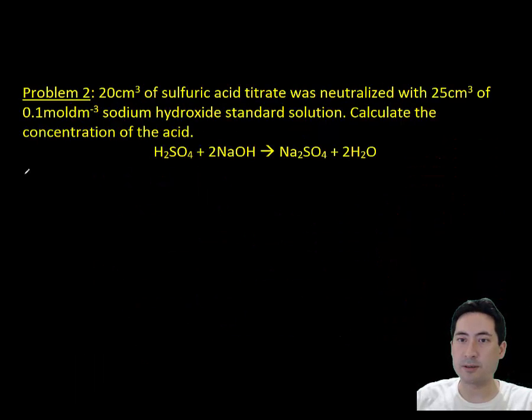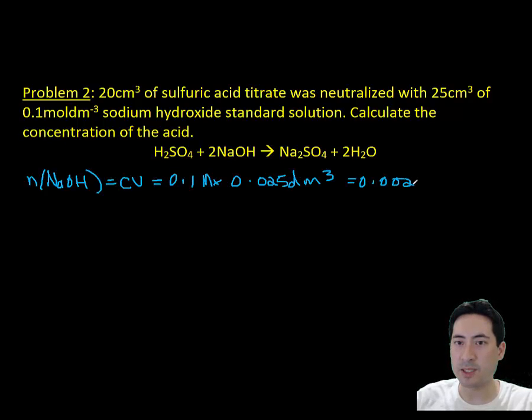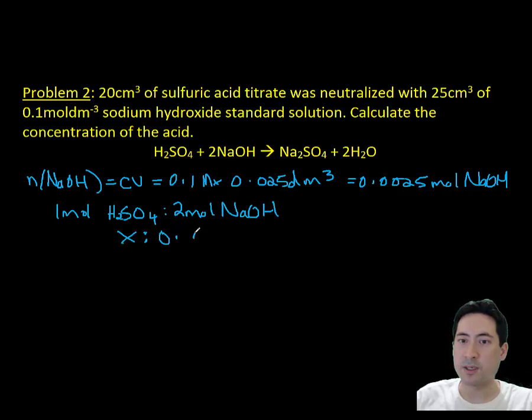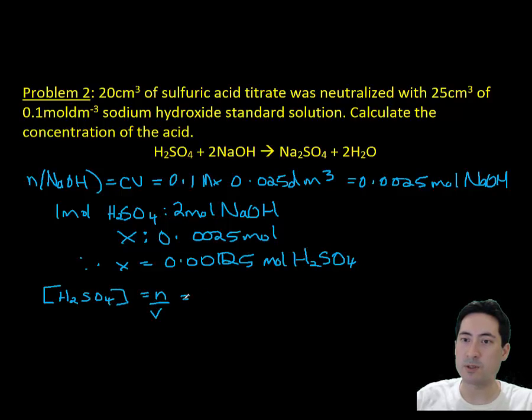Lastly is a proper titrations calculation. This is what you should be doing when you do your titrations. We have 20 mLs of sulfuric acid titrate neutralized with 25 mLs of 0.1 mol sodium hydroxide standard solution. We're trying to work out the concentration of this sulfuric acid. There's our balanced equation. We used 0.0025 mols of sodium hydroxide, so that must mean there was 0.00125 mols of H₂SO₄. By taking the volume, we can work out the concentration of sulfuric acid, which was 0.0625 mols.